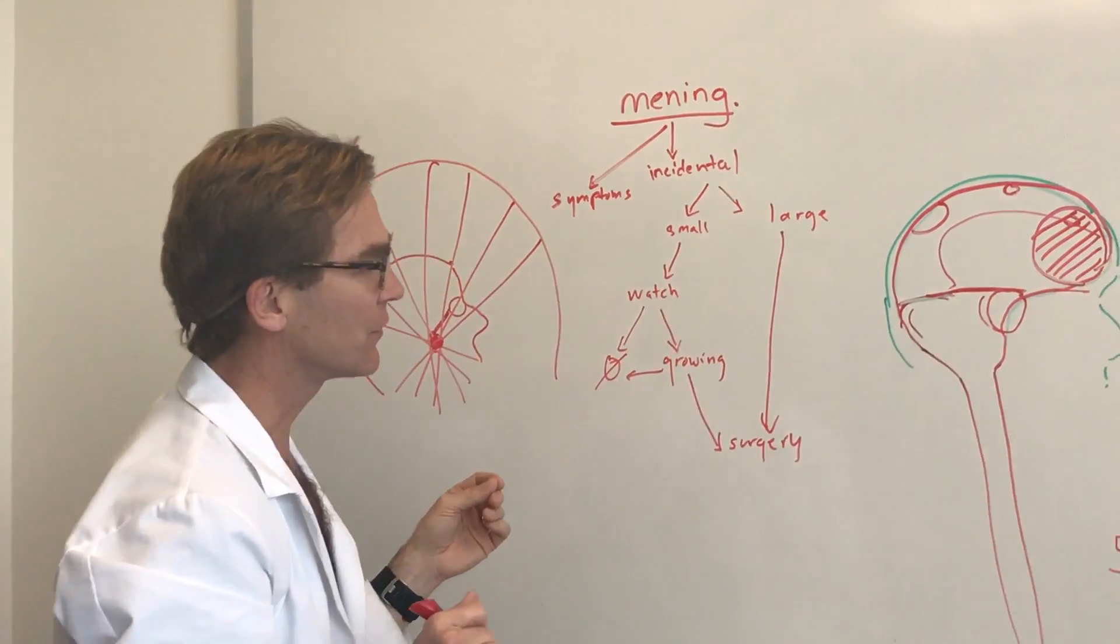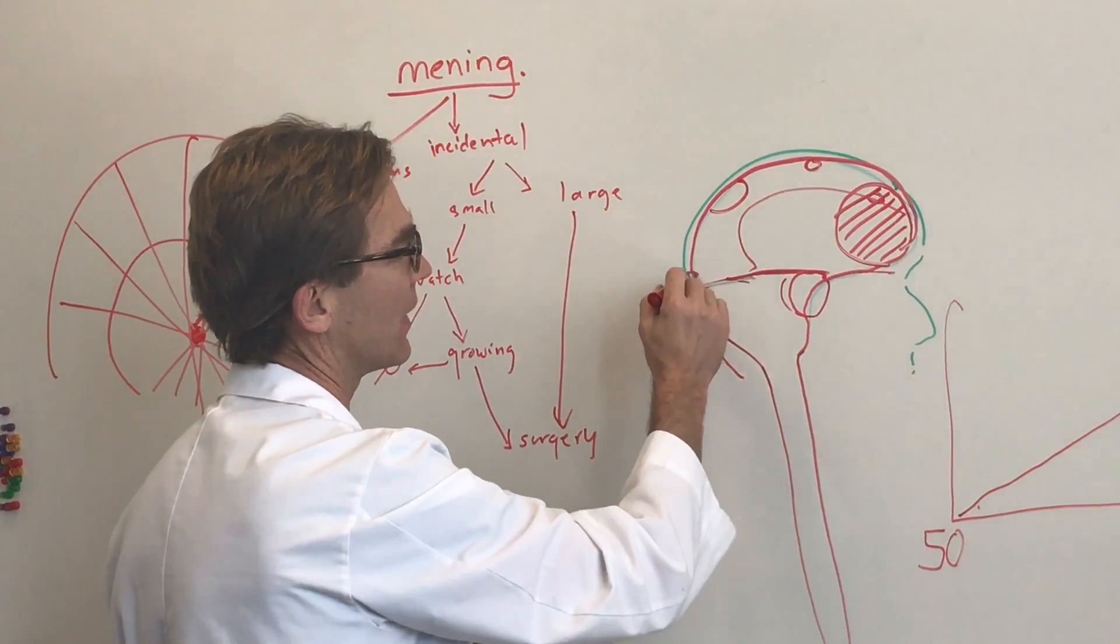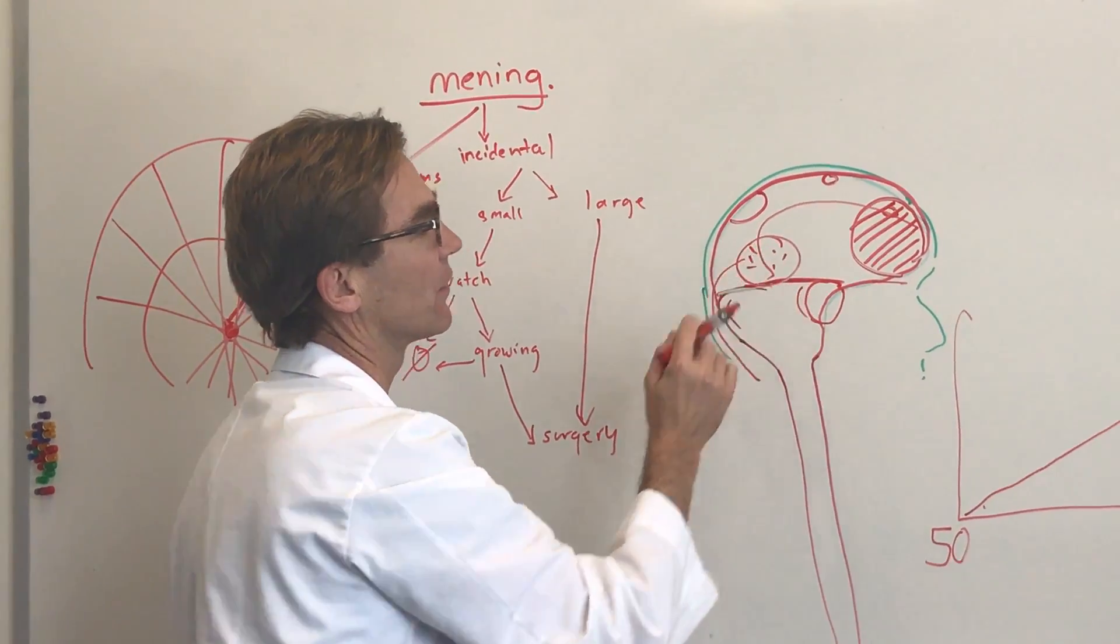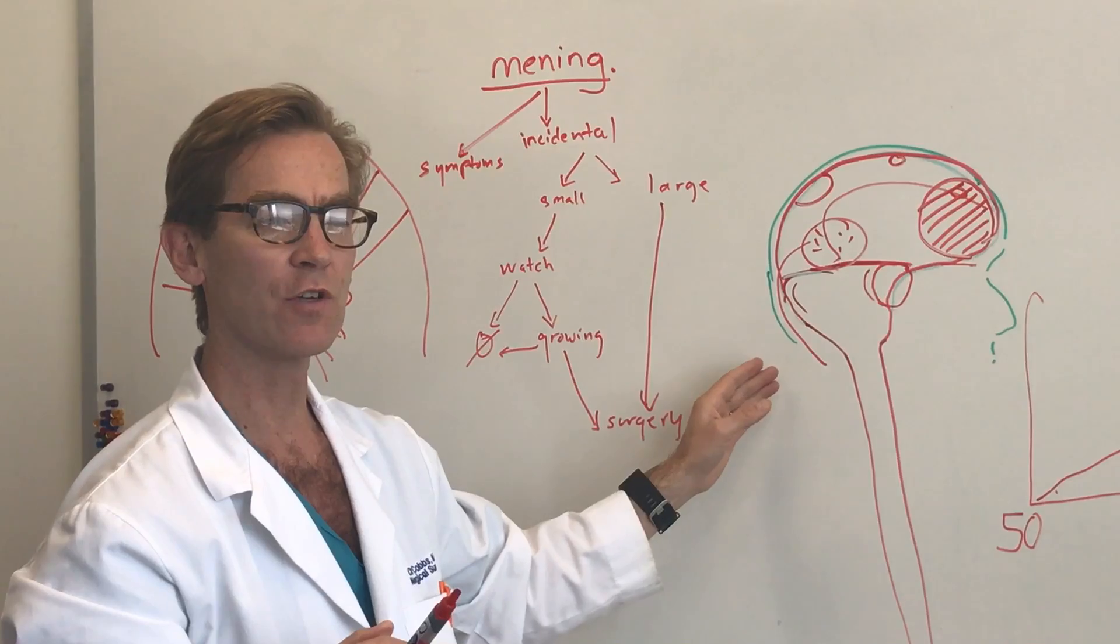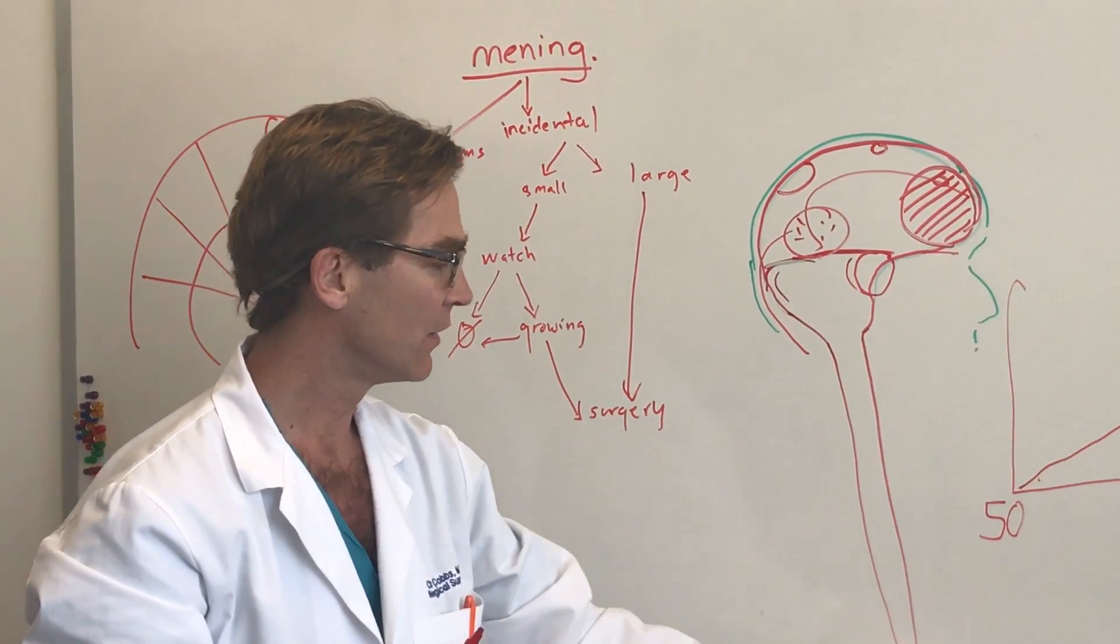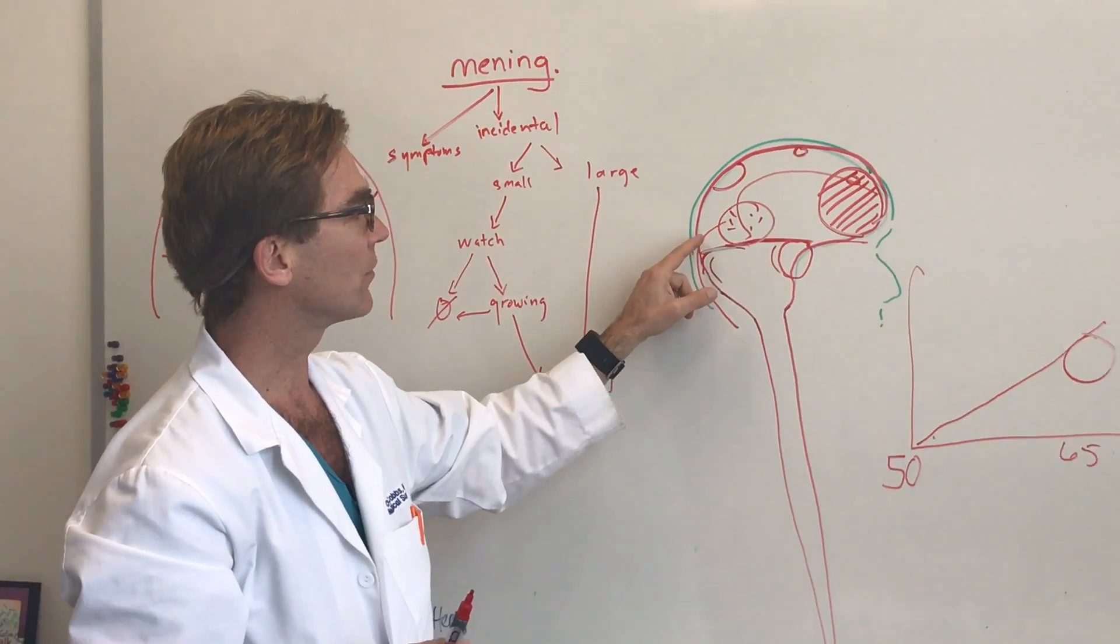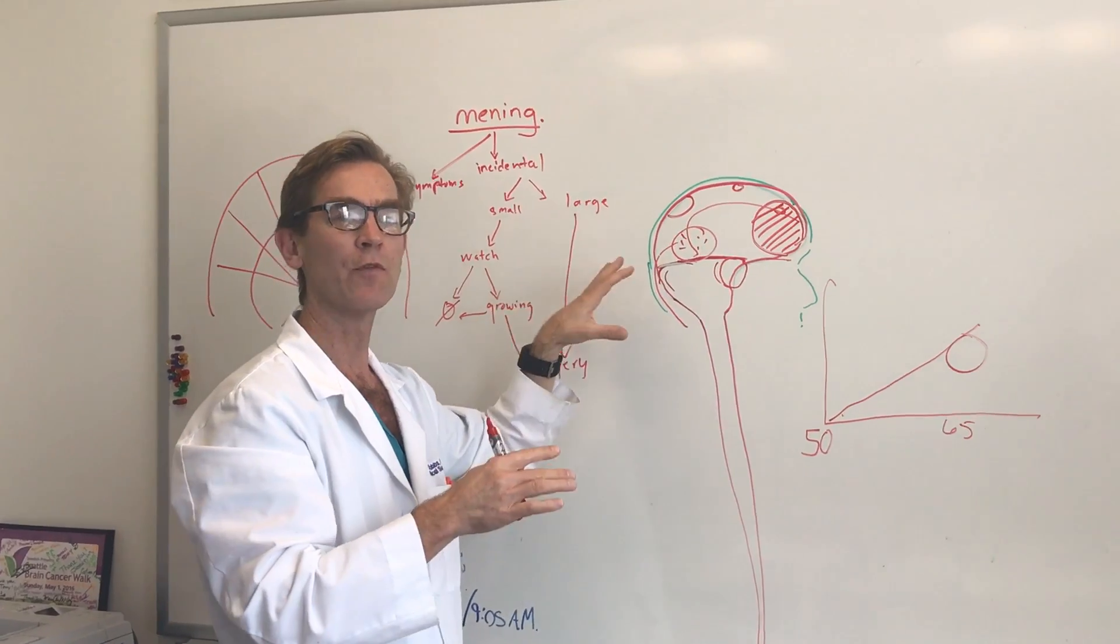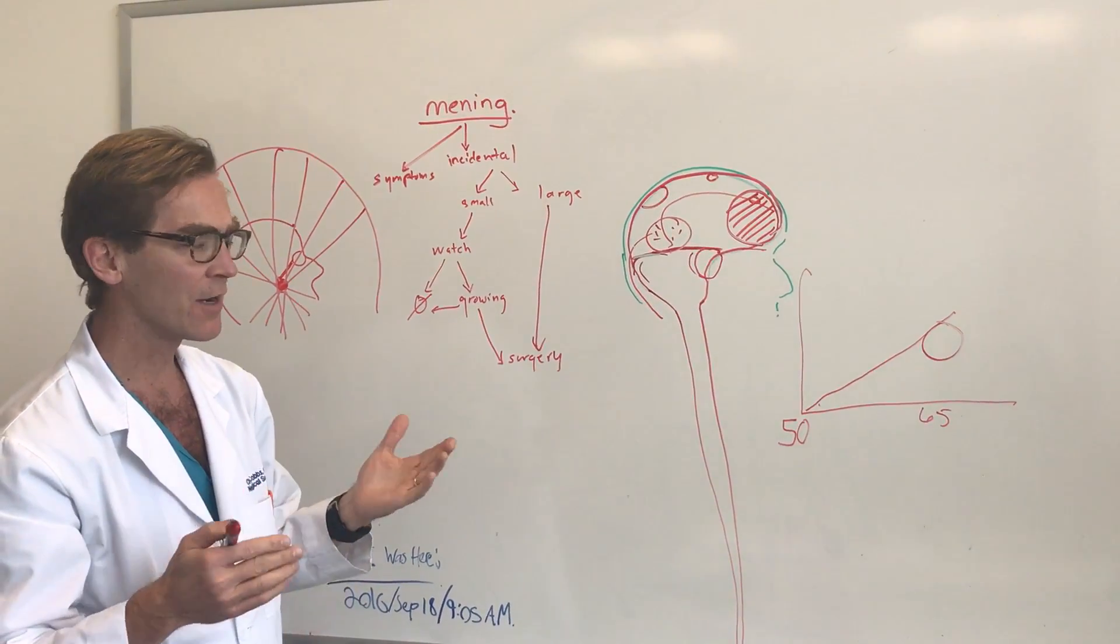Meningioma surgeries can be difficult. Sometimes these tumors are acquiring blood vessels from the outside and they get very vascular. Occasionally they will need to be treated with a procedure called embolization. Basically you go in through the groin and you pass a catheter up into the blood vessel and squirt glue into the blood vessels to shut down the blood vessels right before surgery, so when you take the tumor out it won't be that bloody.